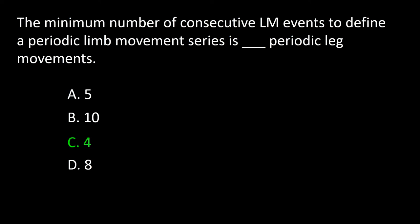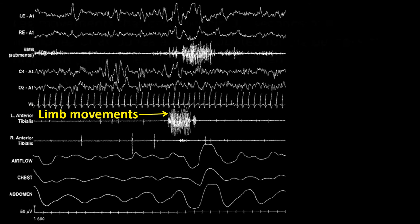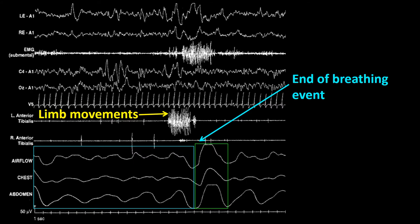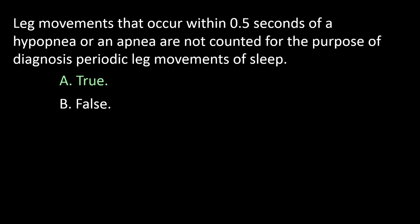Question: Leg movements that occurred within 0.5 seconds of a hypopnea or apnea are not counted for the purpose of diagnosing periodic leg movement of sleep — true or false? An epoch demonstrates a limb movement occurring in conjunction with apnea resolution. When limb movements occur within 0.5 seconds of an apnea or hypopnea, the movement should not be tabulated as an event for the diagnosis of periodic leg movement series. The answer is A — true.